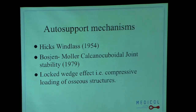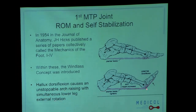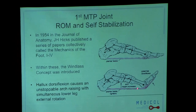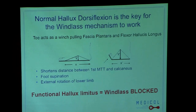For the windlass mechanism, hallux dorsiflexion causes arch rising simultaneously with lower leg external rotation. So this is not only a problem in the sagittal plane — it is really a three-dimensional problem, with external rotation induced by the windlass mechanism at push-off. Normal dorsiflexion is the key for the windlass mechanism to work and is needed to respect the synchronism in gait. Functional hallux limitus locks this windlass mechanism so it cannot occur at the right time.